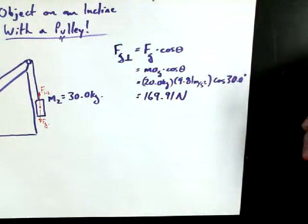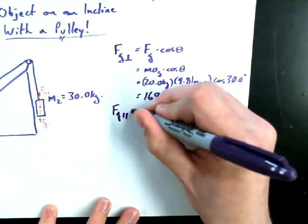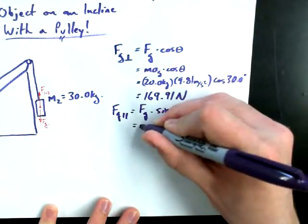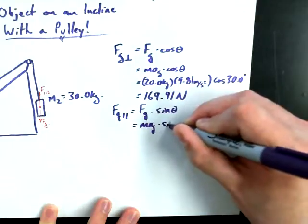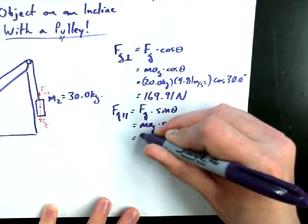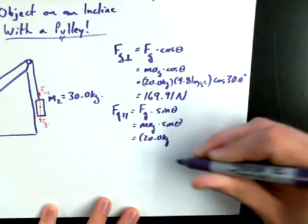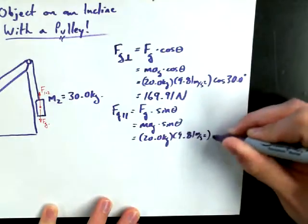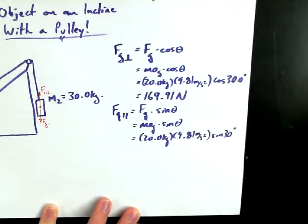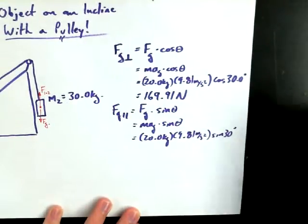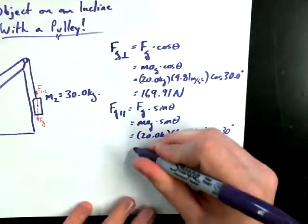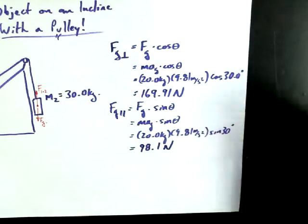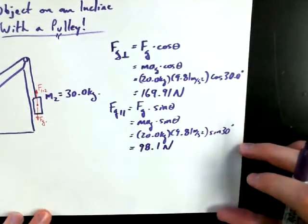And FG parallel is going to be the same sort of idea. We're going to say that it's FG times sine of theta, or mass times acceleration due to gravity times sine theta. Did you get it already? Is it just 98.1 because sine theta is a magic angle? 98.1 newtons. Beautiful.